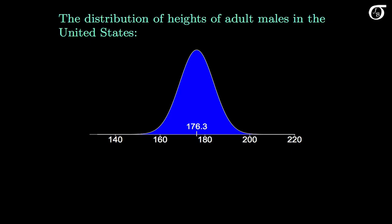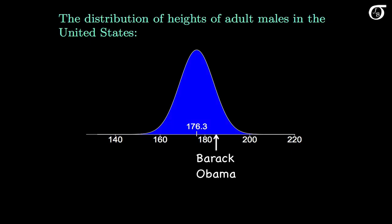Let's look at another example. Here is approximately the distribution of heights in centimeters of adult males in the United States. The mean is approximately 176.3 centimeters, and the standard deviation is about 7.6 centimeters. Let's look at the height and corresponding z-score for a few famous people to give us perspective. Barack Obama is about 185 centimeters tall, with a corresponding z-score of approximately 1.1, so Obama's height is about 1.1 standard deviations above the mean for adult American males.